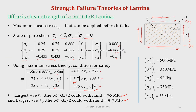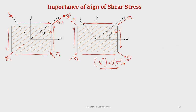So if you see: in one case the failure is actually due to transverse tensile, and in the other case it is actually due to shear. Therefore, this is why the sign of shear stress is important in determination of the off-axis shear strength of a lamina. If somebody wants to know what is the maximum shear stress an angle lamina can withstand in the x-y plane, we have to specify the direction of the shear stress — if positive in this case it is 70 MPa, if negative it is 5.7 MPa.